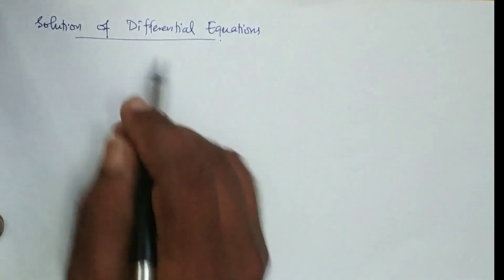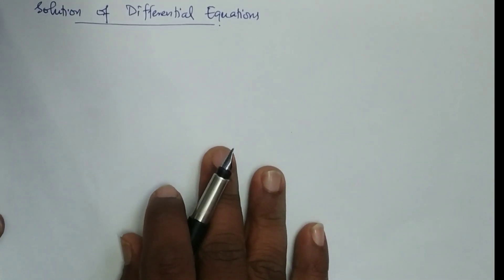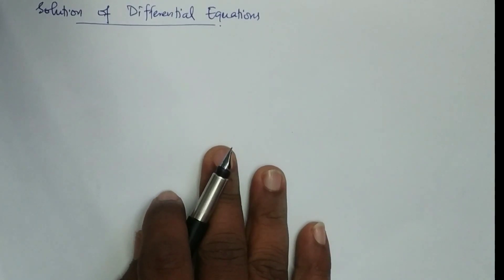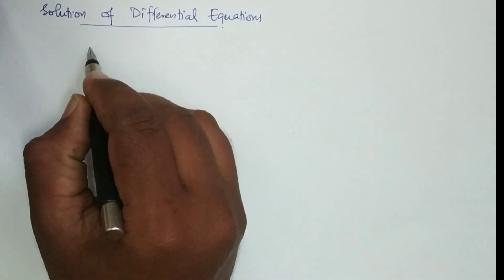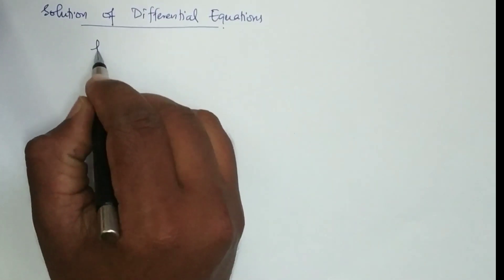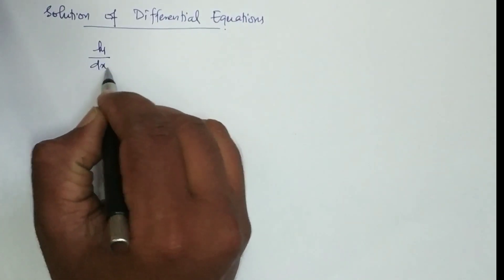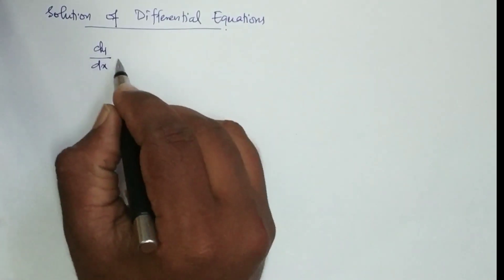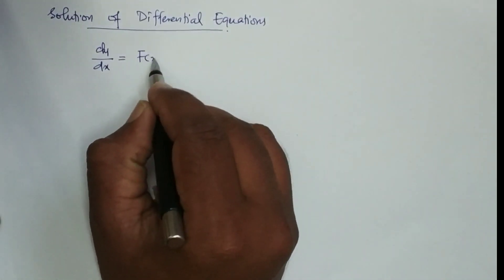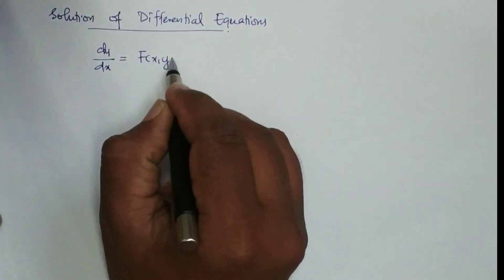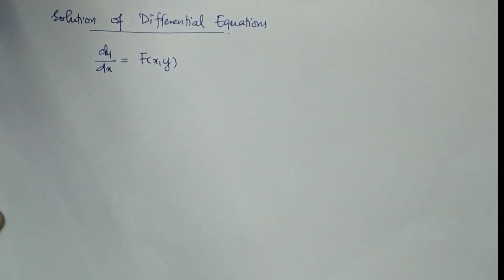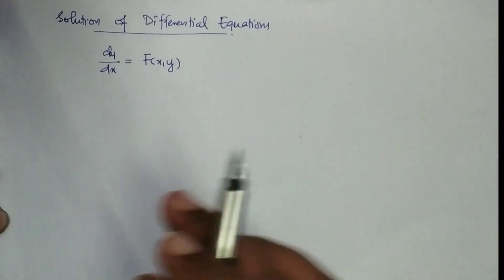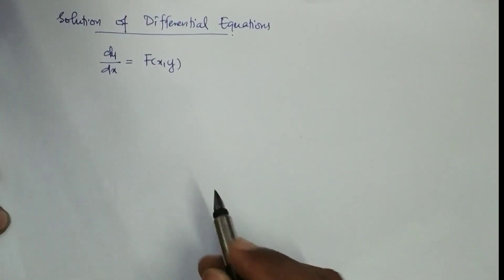Solution of differential equations. First order, first degree differential equation — understood as dy/dx = f(x,y). To solve a first order first degree differential equation, we have three methods.